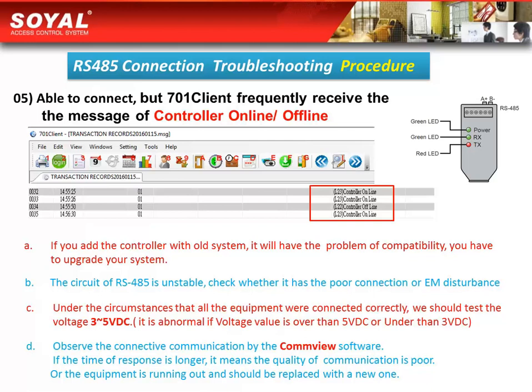Second, the RS485 circuit is unstable — check whether there is a poor connection or electromagnetic disturbance. Third, under the circumstance that all equipment is connected correctly, test the voltage, which should be 3 to 5 volts DC. It is abnormal if the voltage value is over 5 volts DC or under 3 volts DC. Fourth, observe the communication connection using the COMFIL software. If the response time is too long, it means the quality of communication is poor, or the equipment is worn out and should be replaced with a new one.